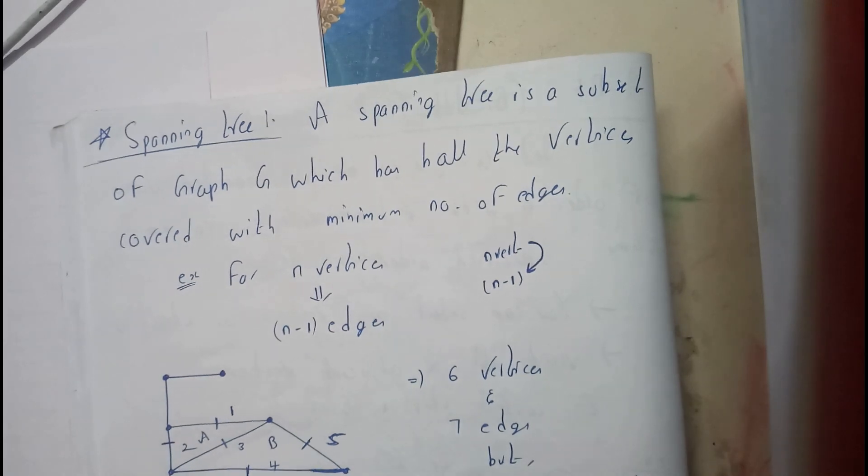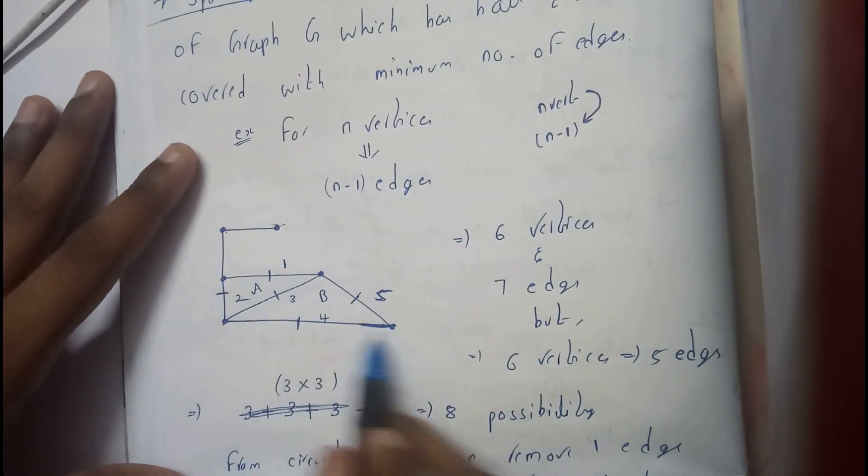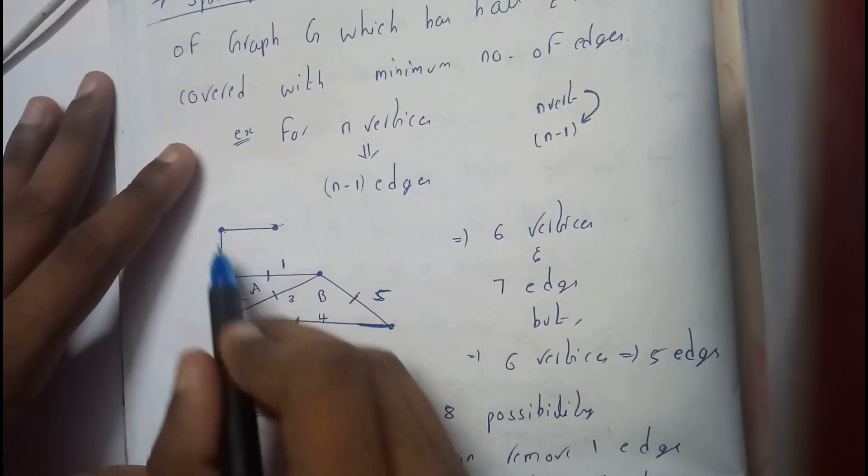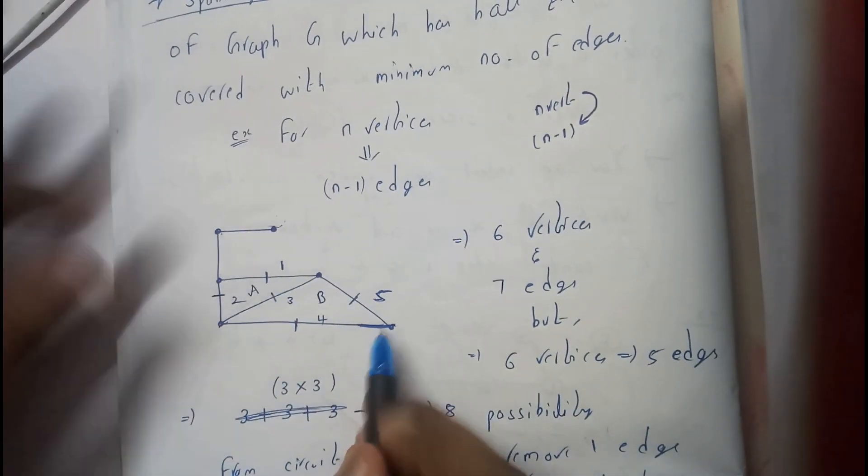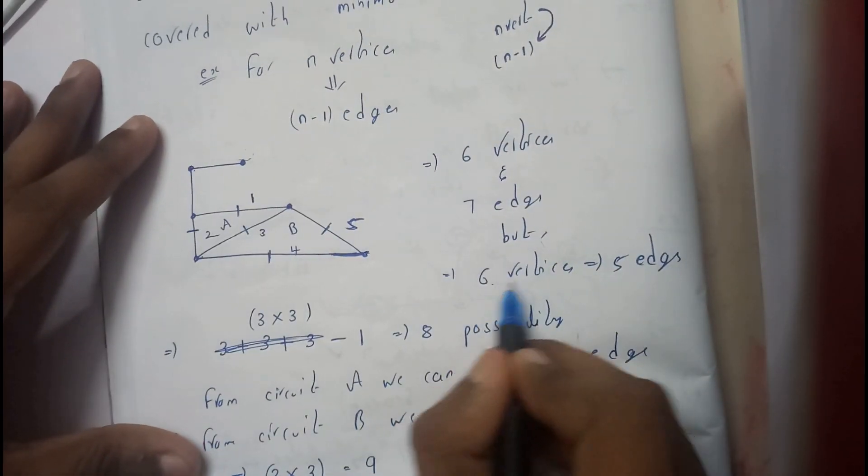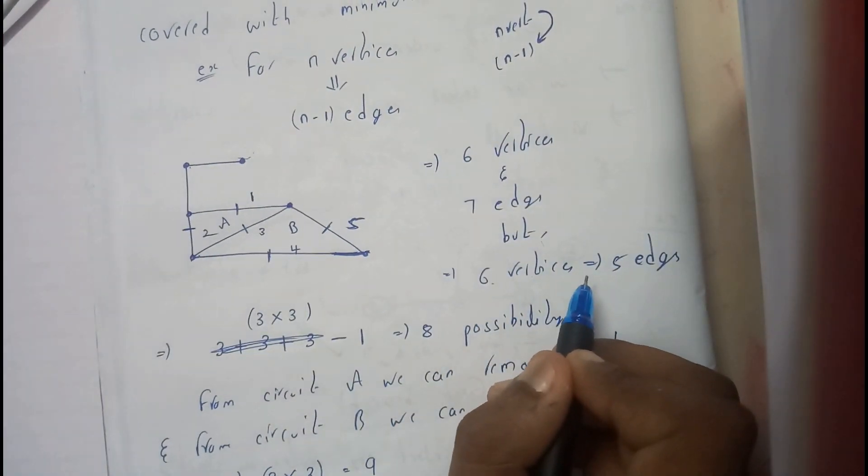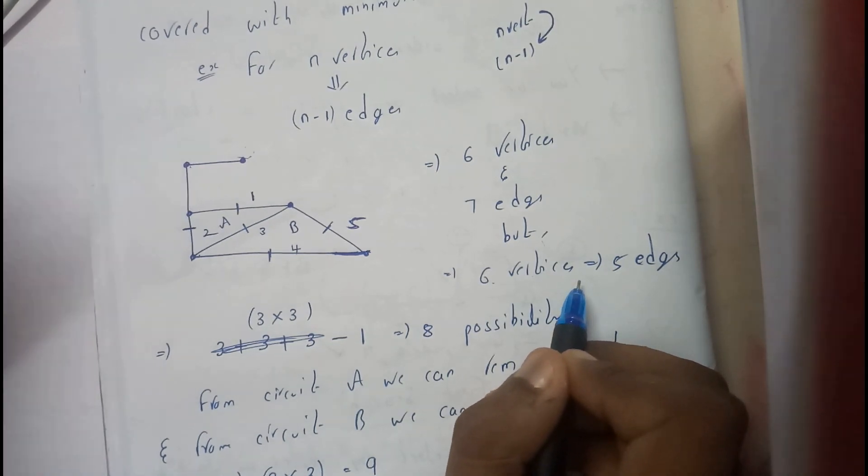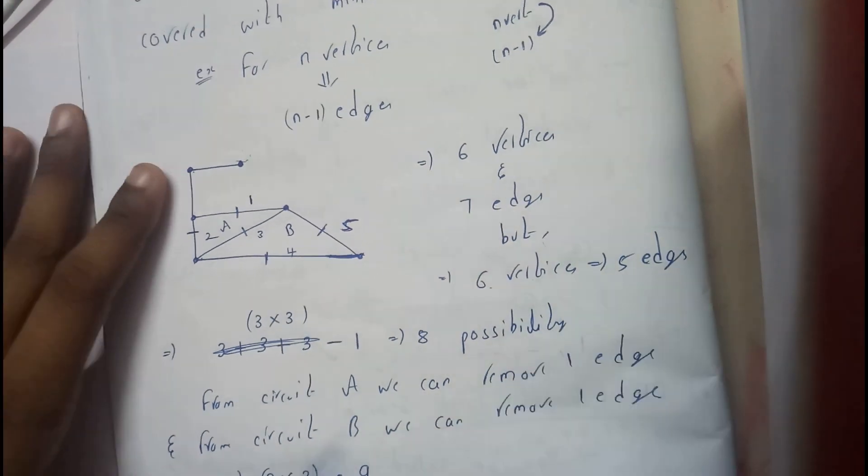Let us take an example. This is an example given with 1, 2, 3, 4, 5, 6 - six vertices and 7 edges. But for 6 vertices the minimum number of edges required is 5.